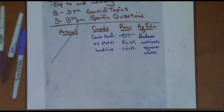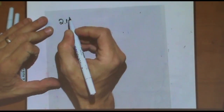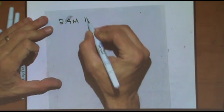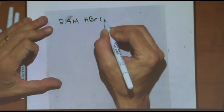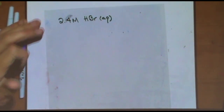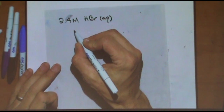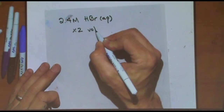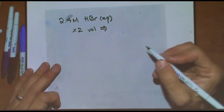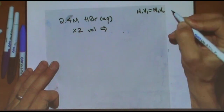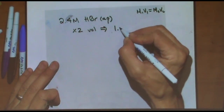Let's do a couple variations of the dilution. What would happen if I double the volume? What would happen to the molarity? It goes down by half, so it would be 1.2 molar.